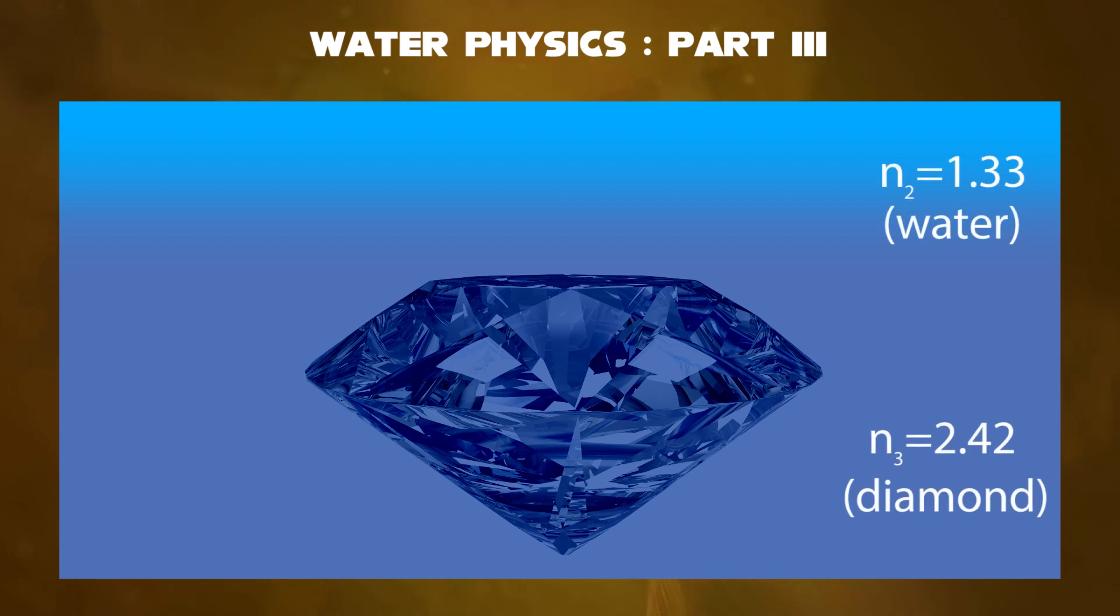Additionally, let's put a third medium in the water, N3, say refractive index of a diamond. But please don't get confused with the chaos emerald that generates tremendous amounts of energy. The refractive index of diamond is 2.42.